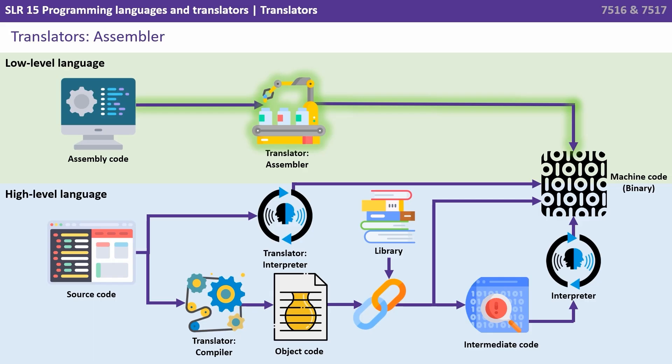Starting in the top part with the green background we have our low level languages. These are typically written in assembly code and they're translated directly in a one-to-one relationship into machine code by an assembler.